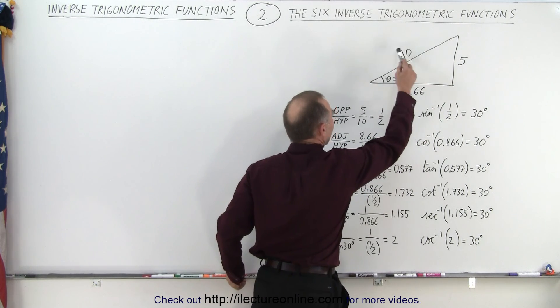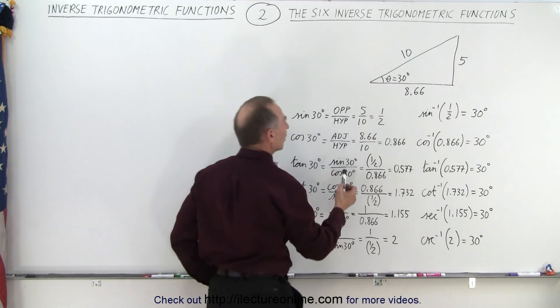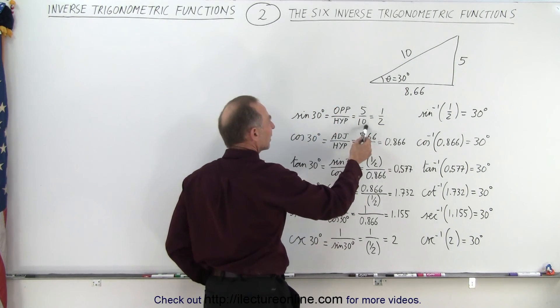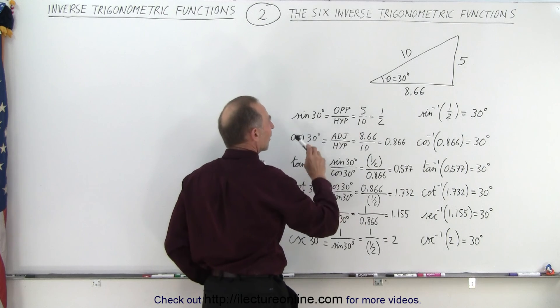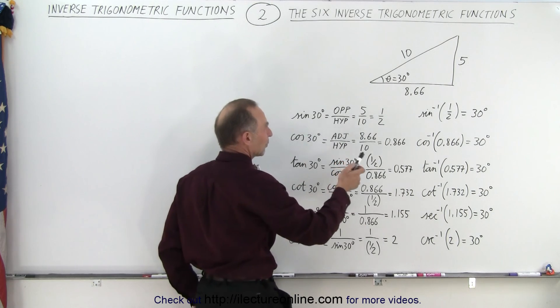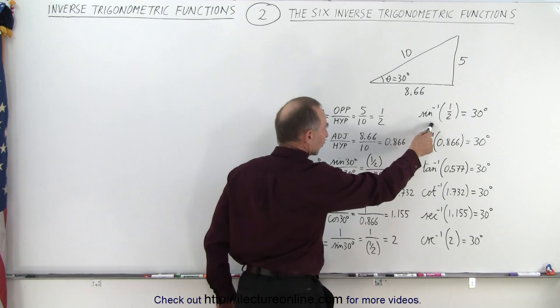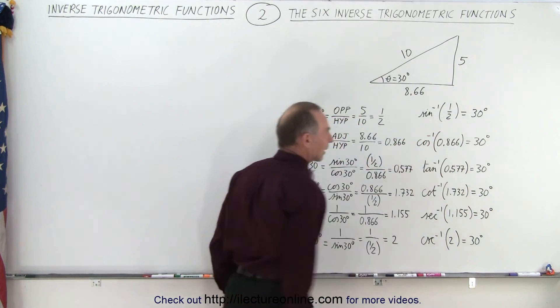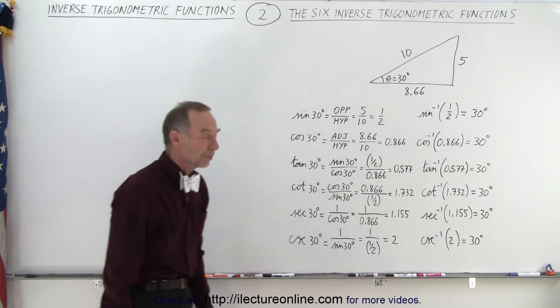In this case it's 5 over 10, which is equal to one half. Therefore, if we take the inverse sine of one half we get back the angle of 30 degrees.